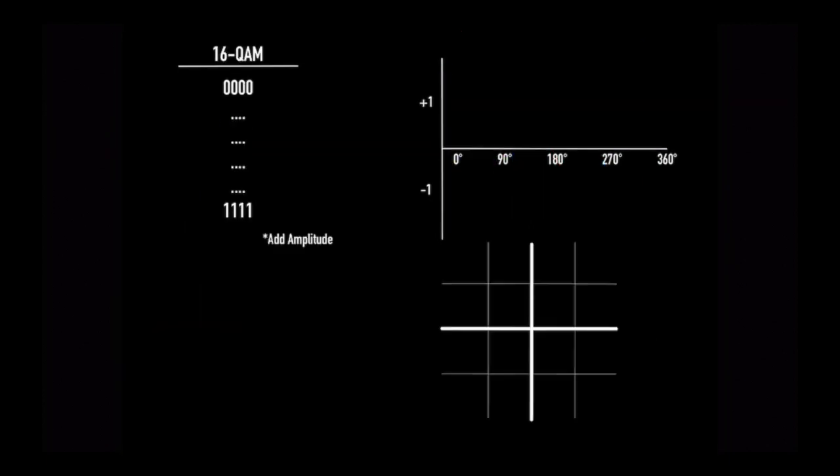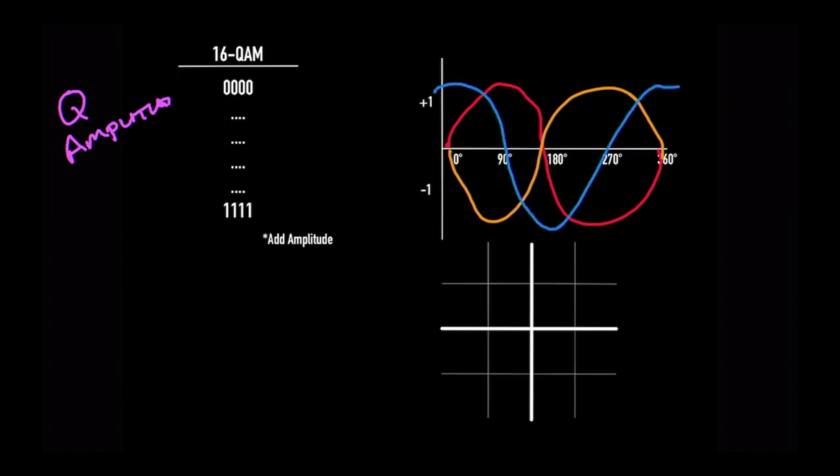Well, in this case we're going to switch to something called QAM. The Q is still quadrature, the A is for amplitude. We're going to change. We still have the same waveforms we had before with the sine, and the cosine, and the minus sine, and the minus cosine.